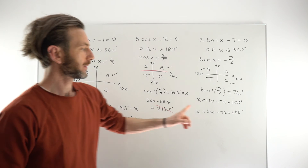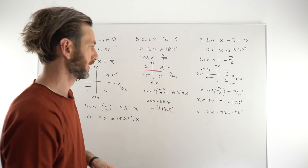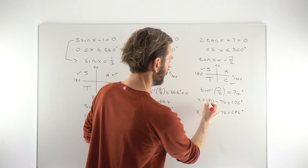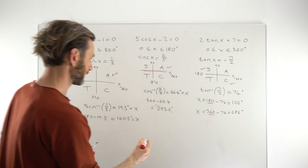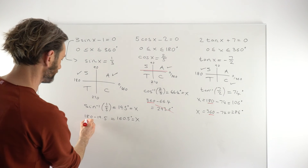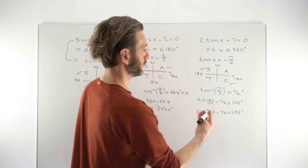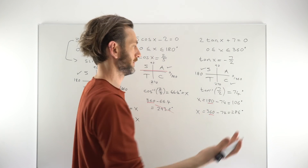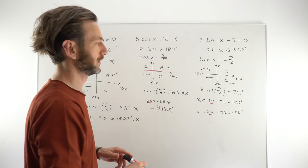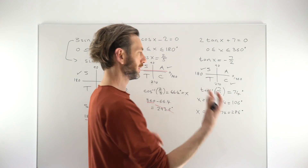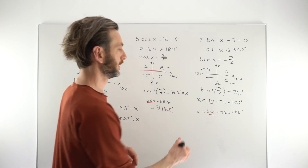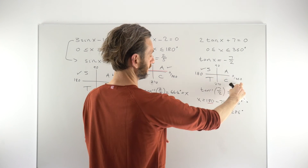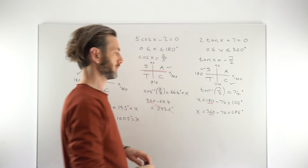One thing worth mentioning about the CAST diagram: notice that we make our adjustments from either 180 or 360 — the horizontal line. Some people want to use 90 and 270 instead. You can, but the process is more elaborate and there's more chance of making a mistake. So always try to make your adjustments off the horizontal — 180 and 360 — rather than the vertical line.